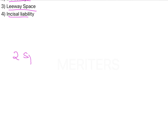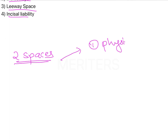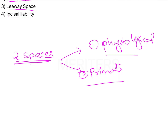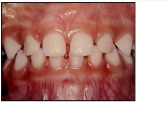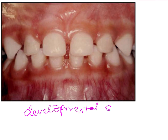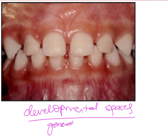In the deciduous dentition there are two types of spaces which are present, and both are normal and desirable. The first type is the physiological space and the second type is known as the primate space. The physiological spaces are also known as developmental spaces. They are generalized spaces — generalized spacing that is present between all of the teeth within the deciduous dentition.